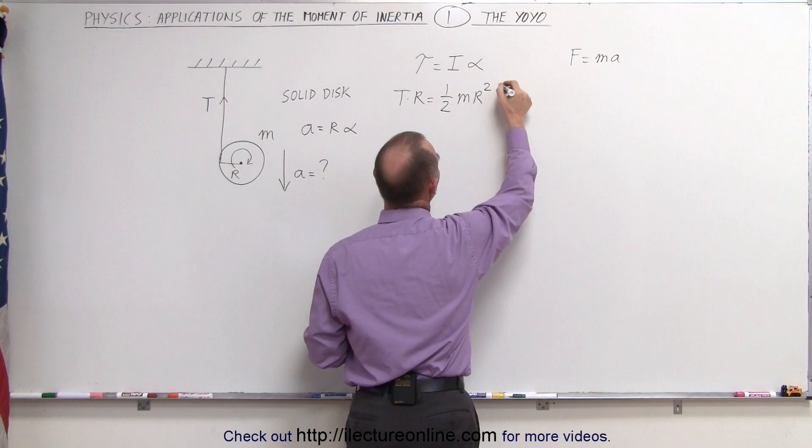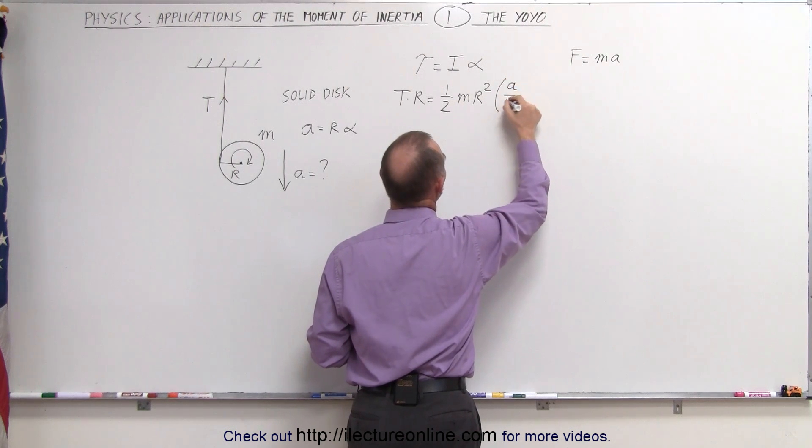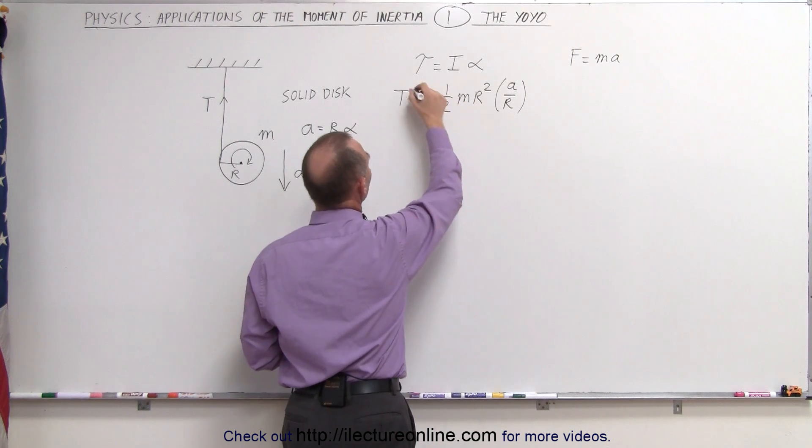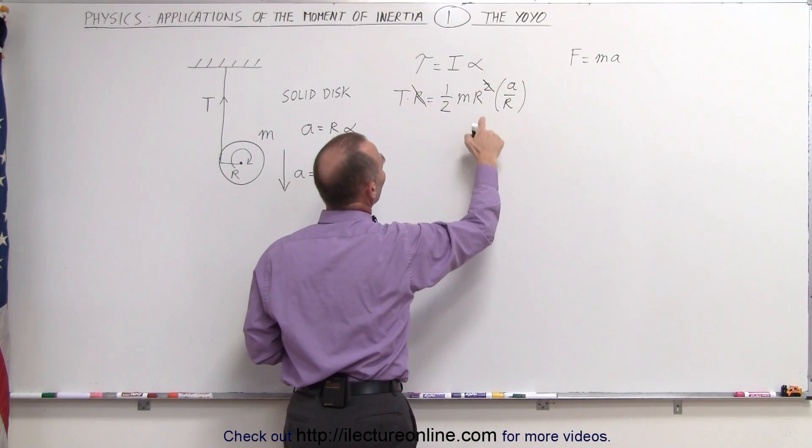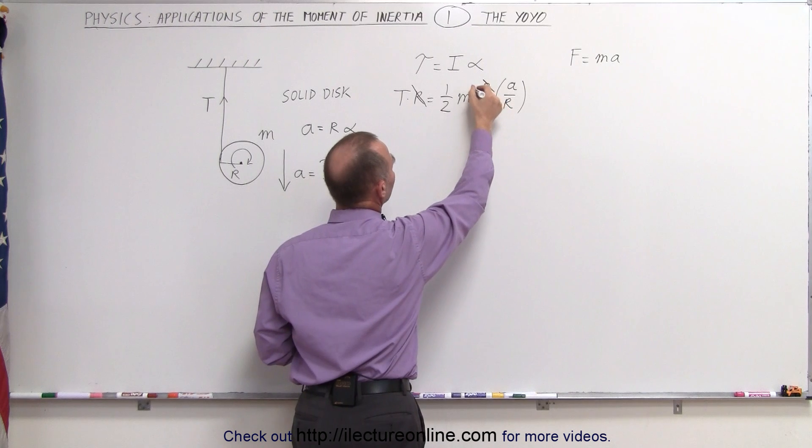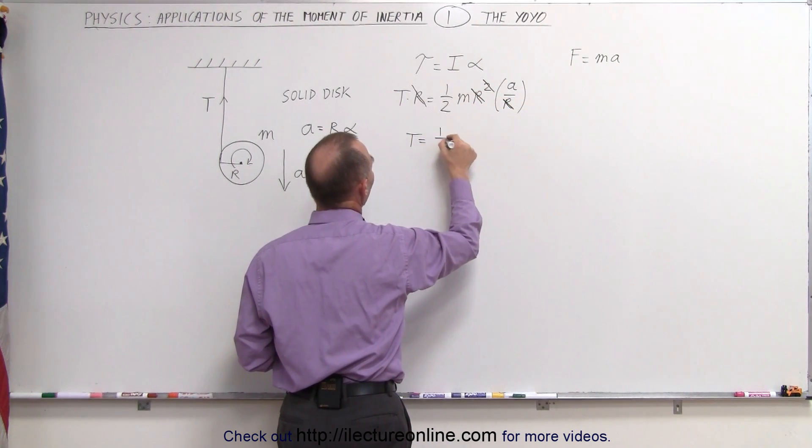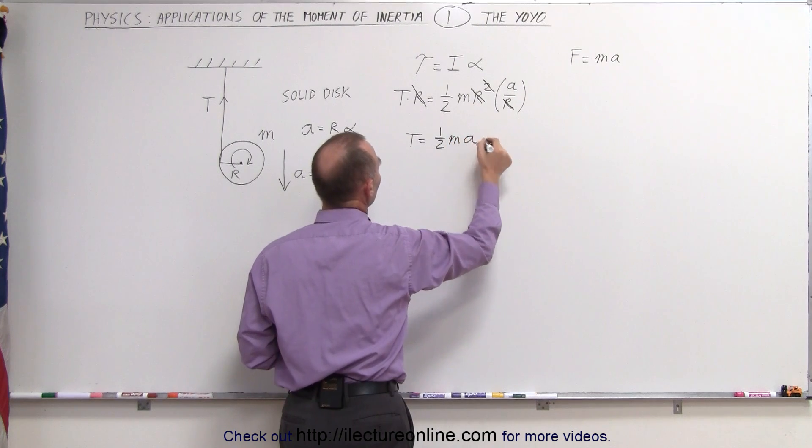So instead of writing alpha angular acceleration we can write A divided by R and then notice that we have an R on the left side and an R square on the right side so that cancels out and we have an R here and an R in the denominator that cancels out. In other words we can write that the tension is equal to one half the mass times acceleration.